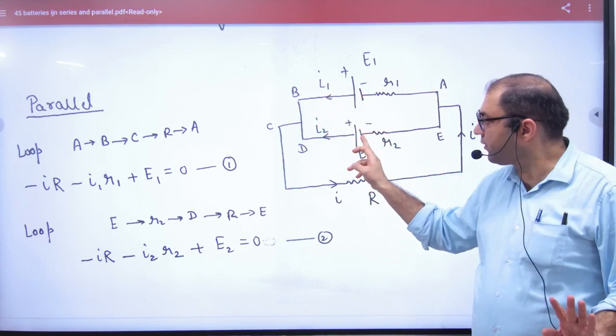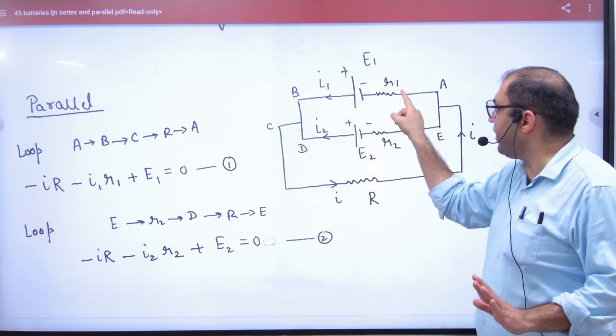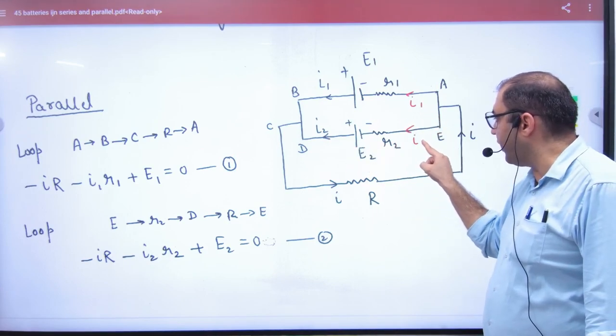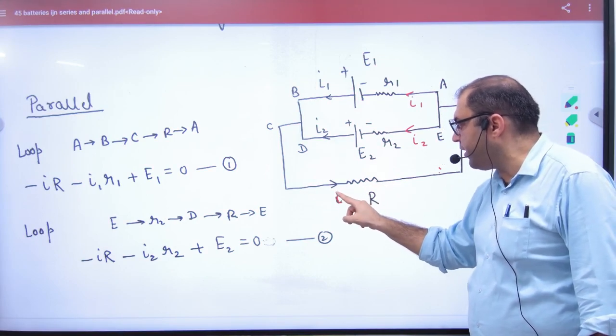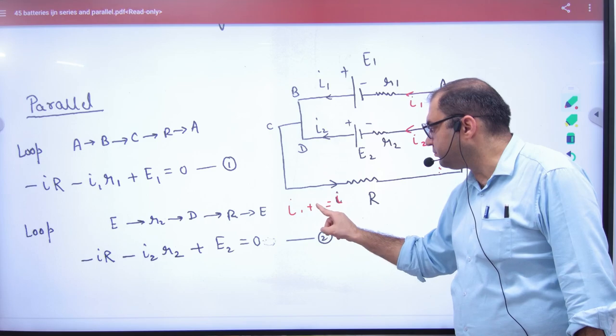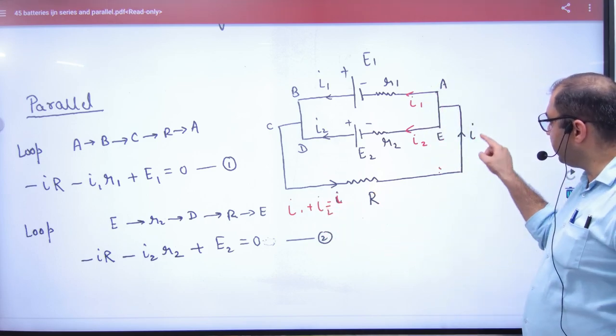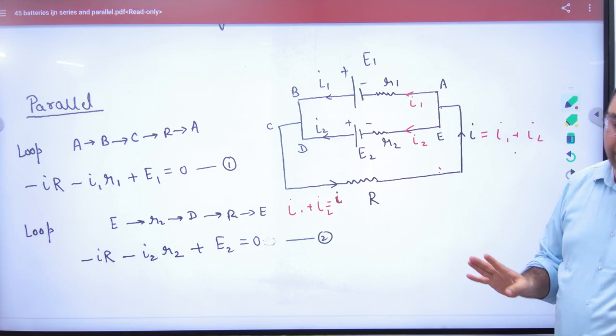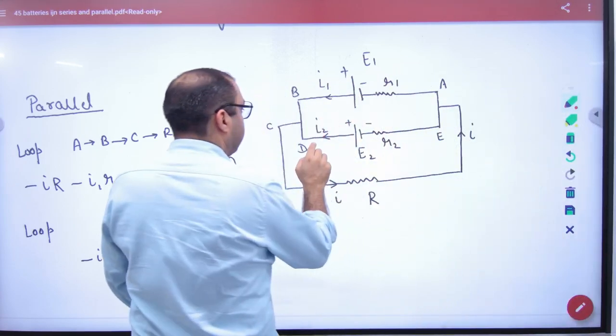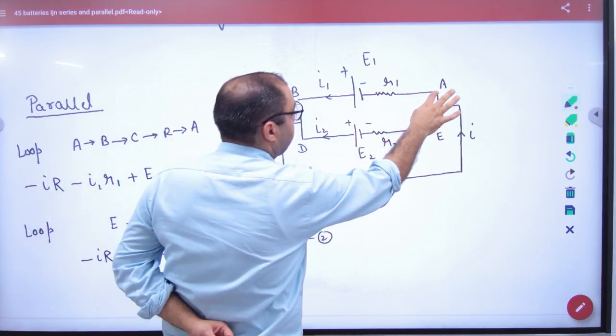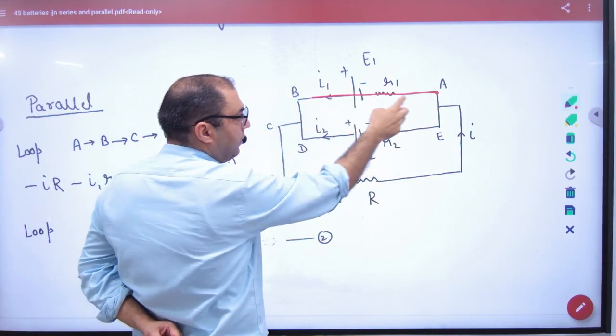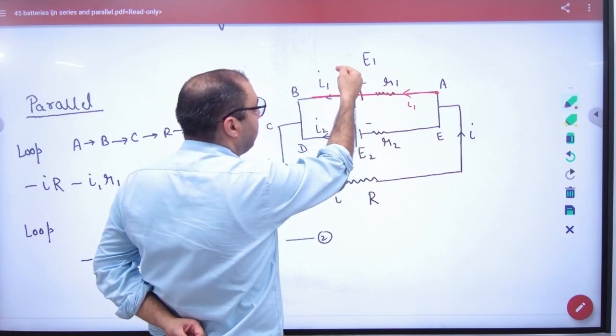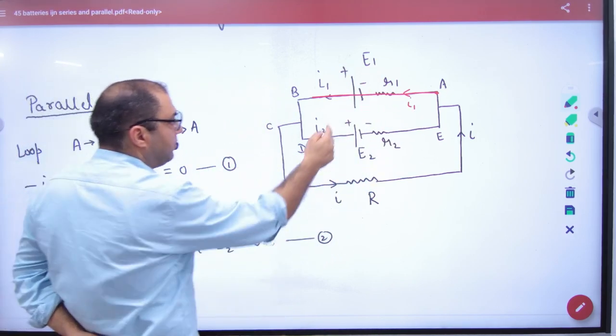I1 from the battery will be here. Now I will apply Kirchhoff's law. First, I will put it on this path. If I am going from A to B to C to B to A, what will be minus I1 into R1, then plus E1.